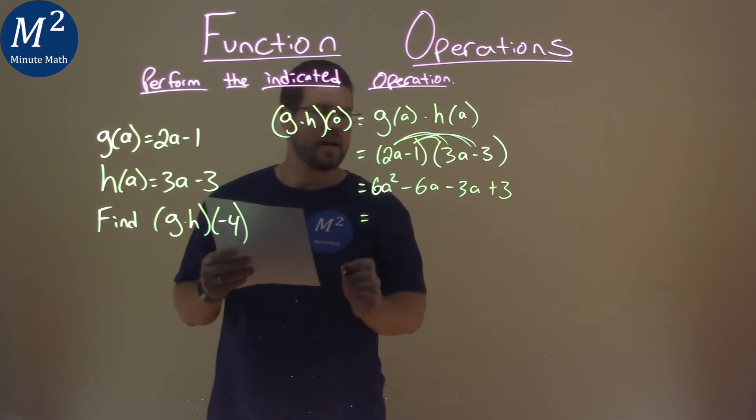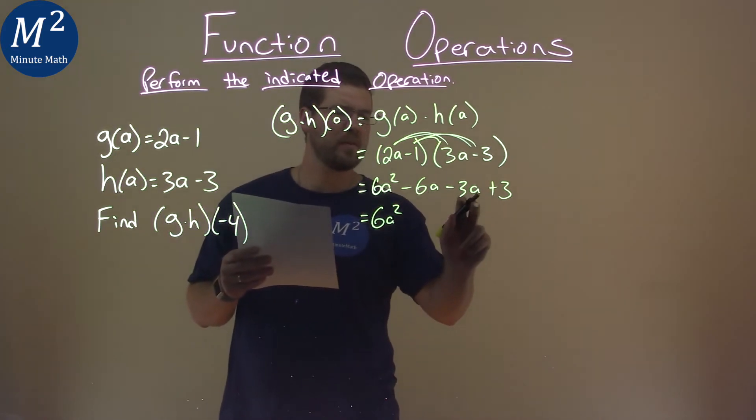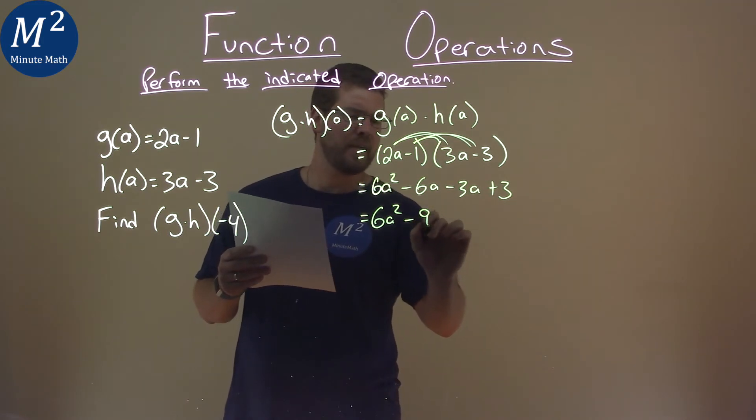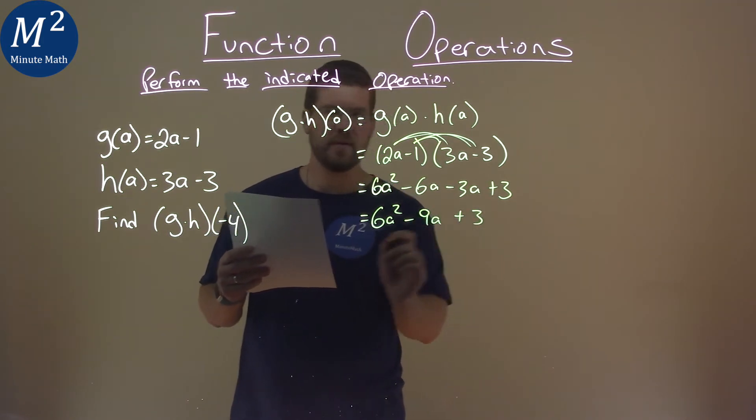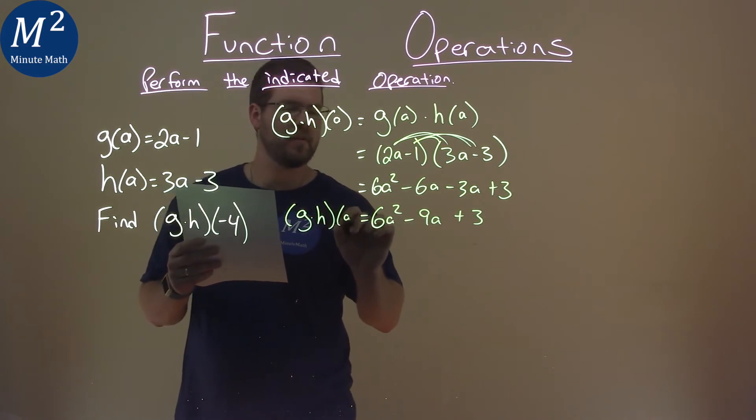So keep going. We're going to combine our like terms. Nothing goes with a squared, but minus 6a minus 3a is minus 9a plus 3 here. And so this is our simplified g times h of a.